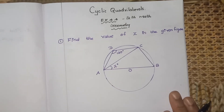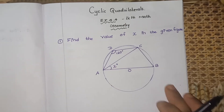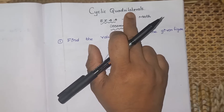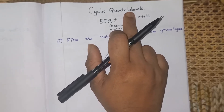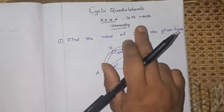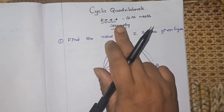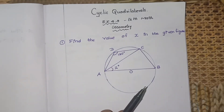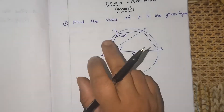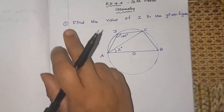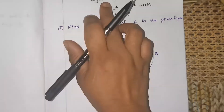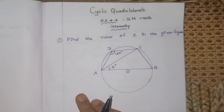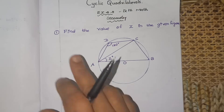Students, today we are going to see cyclic quadrilaterals — a very important concept in 9th standard. It comes into Chapter 4, Geometry, exercise 4.4, first sum. Before we start this question, let's understand what we mean by a cyclic quadrilateral.